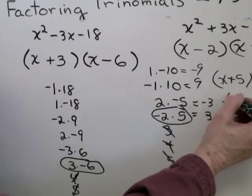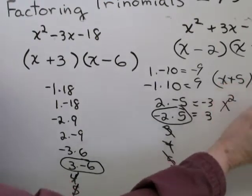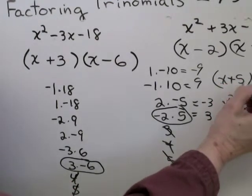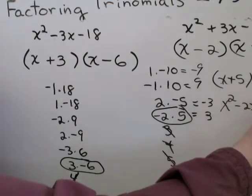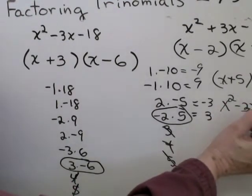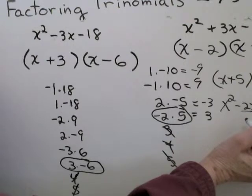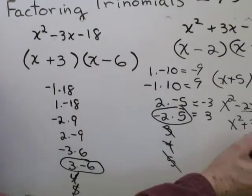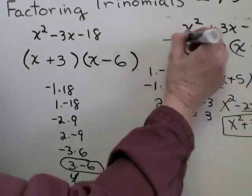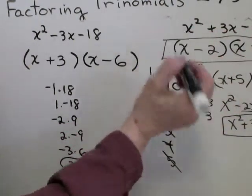x times x, x squared. x times minus 2, minus 2x. 5 times x, plus 5x. 5 times minus 2, minus 10. And those add up to plus 3 in the middle. So x squared plus 3x minus 10. Final answer? Checks. So that is the factor grouping.